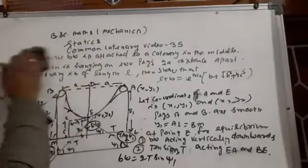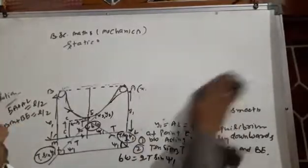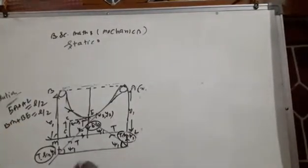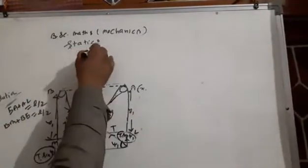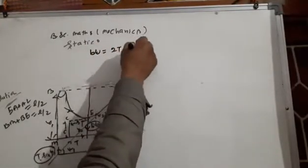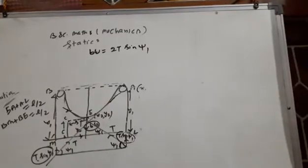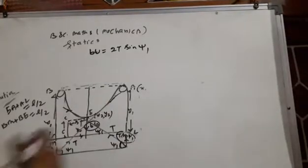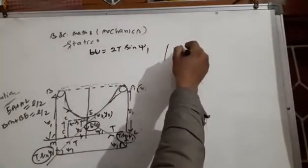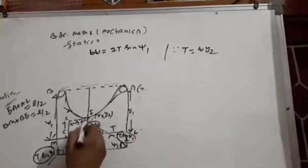We are going to verify both of them. Let's change the language. We have to solve the question. Then, vw equal to 2t·sinθ1. Because t equal to w divided by 2.